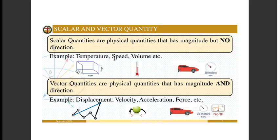For example, temperature — we don't need any direction to completely describe the physical quantity of temperature. You will not report your temperature as 'one degree Celsius north,' because that is very awkward and there is no such thing in temperature. Temperature is a scalar quantity, so it only has magnitude — the numerical value and the unit of measurement. The speed is actually the quantity that describes how fast an object is moving.